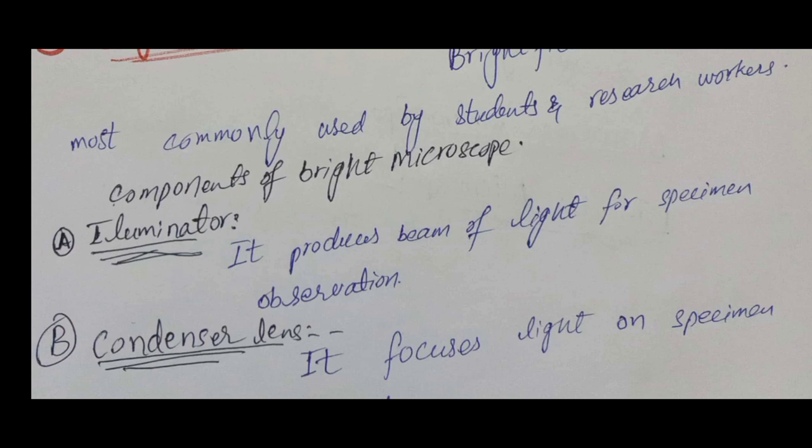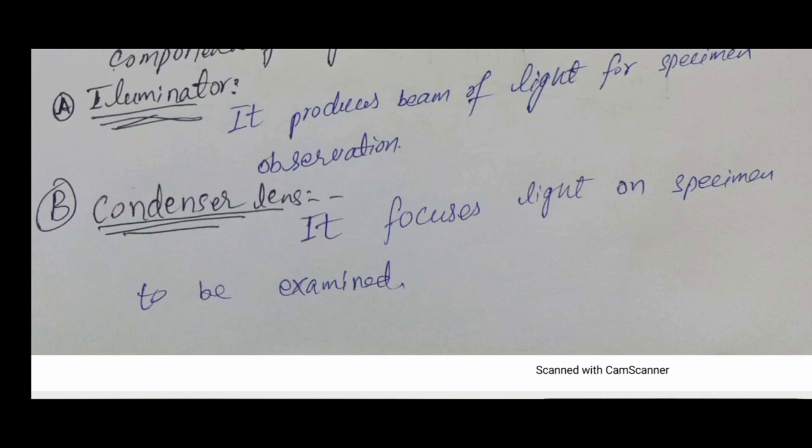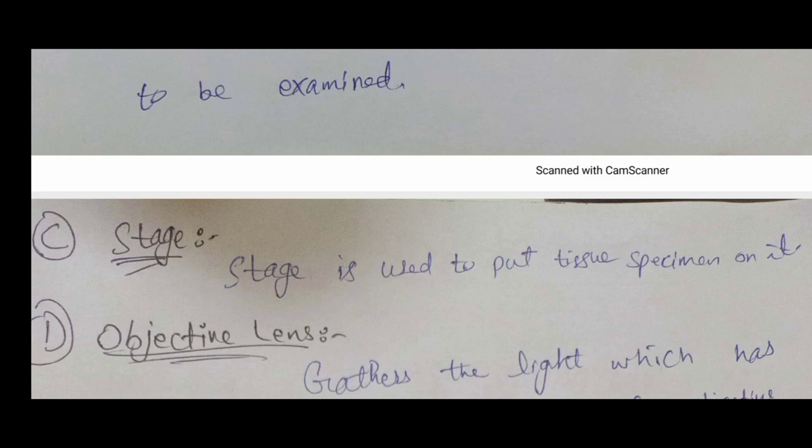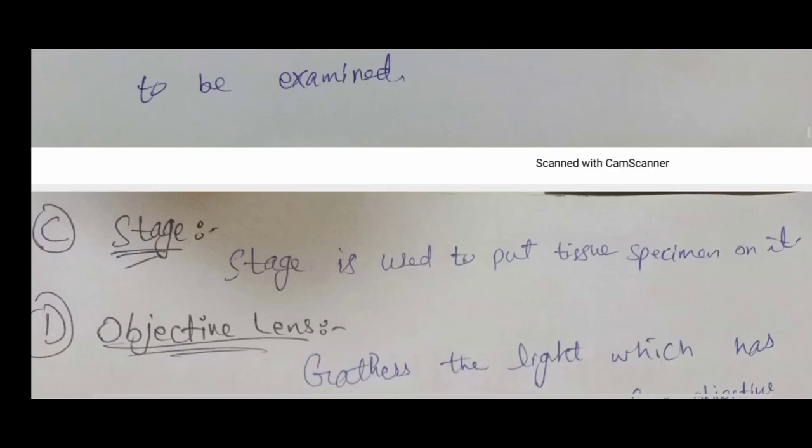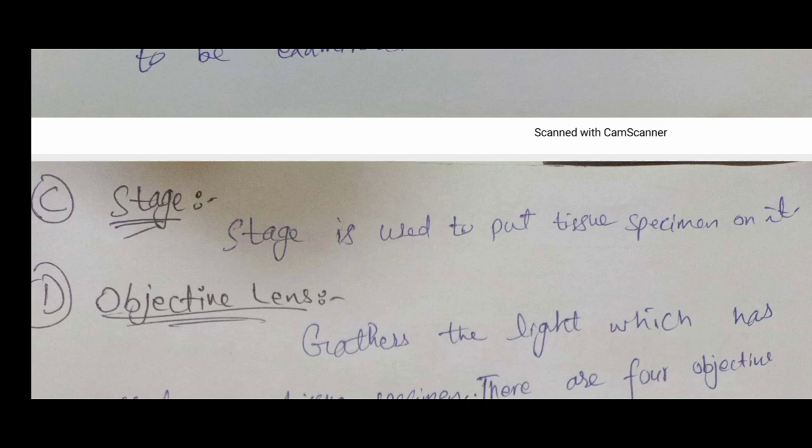The second part is the condenser lens — its function is to focus the light produced by the illuminator onto the object or specimen for examination. The third part is the stage, which is used to place the specimen on it for examination. The fourth part is the objective lens — its function is to collect the light that has been focused by the condenser lens and passed through the object.